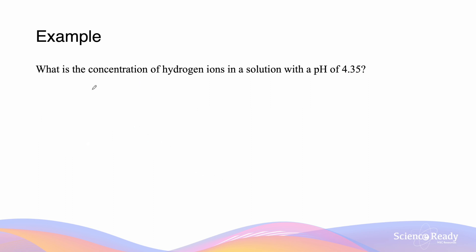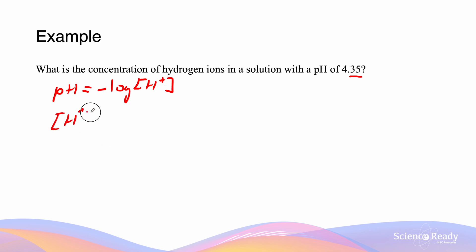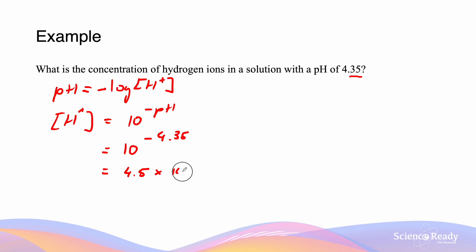This next question asks: what is the concentration of hydrogen ions in a solution with a pH of 4.35? There are two decimal places given for the pH, and in reverse, decimal places become significant figures, so we give our answer to two significant figures. The H+ concentration equals 10 to the negative pH, which is 10 to the negative 4.35, giving 4.5 × 10⁻⁵.